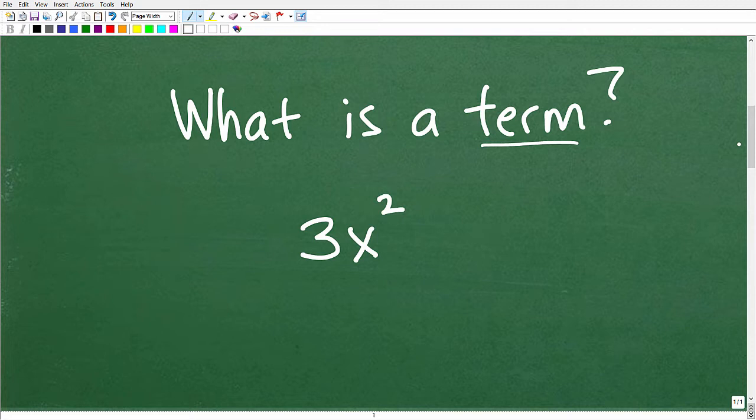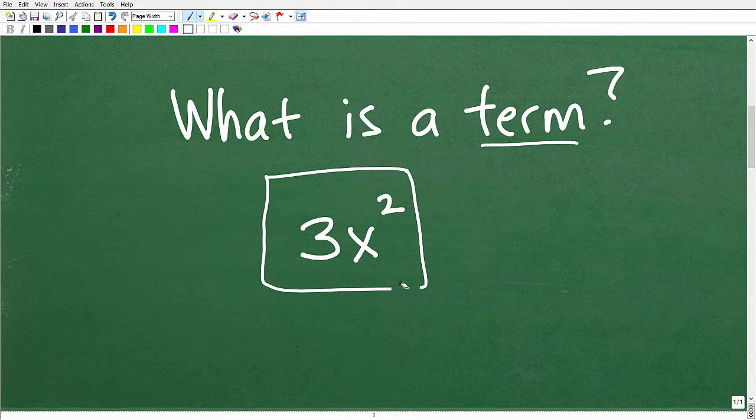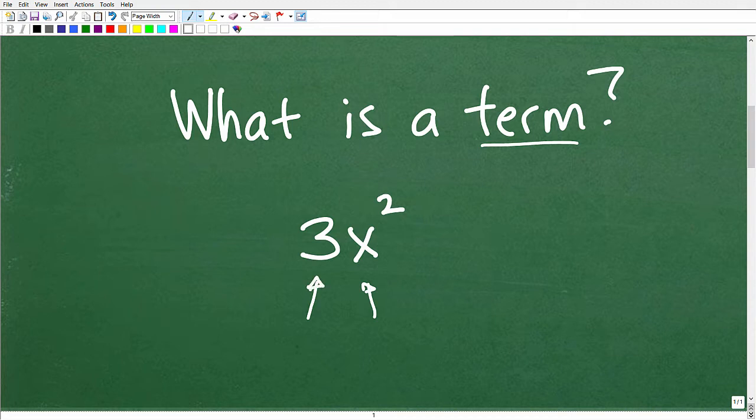We kind of want to answer that question first. So here is an example of an algebraic term. What makes up a term in algebra? It's kind of like the building block here of algebra. So this would be one term. This is not multiple terms. This is just one term. And a term has a variable. It can be any variable. In this case, we're using x. But it could be y, it could be z. It doesn't make a difference. And then you're going to have a number in front of that variable. So if I have just x squared, you still have a number that's 1. So here's our variable x, and here is our number 1. And the number that's in front of the variable we call the coefficient.